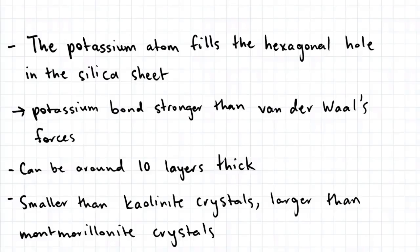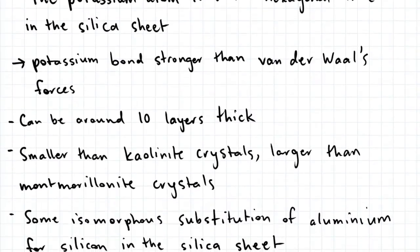Illite can be around 10 layers thick, and is smaller than kaolinite crystals, but larger than montmorillonite crystals. There's also some isomorphous substitution of aluminium for silicon in the silica sheet.